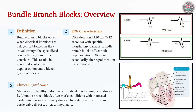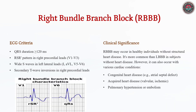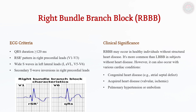RBBB is identified by the characteristic RSR' or 'rabbit ears' pattern in V1–V3, a wide S-wave in leads I and V6, and secondary T-wave inversions in right precordial leads. While RBBB may be seen in healthy individuals, it can also indicate pulmonary embolism, congenital heart disease such as atrial septal defect, or right ventricular hypertrophy. When RBBB occurs acutely in a patient with chest pain, concurrent ischemic changes should be carefully assessed for signs of infarction.